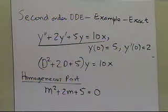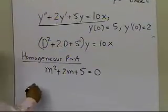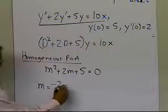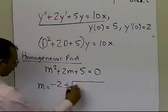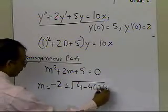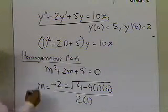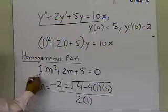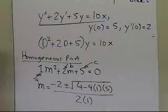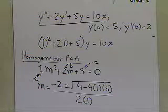Now I need to find out what the roots of this particular equation are. I'm going to use the quadratic formula, so it's minus b, which is minus 2, plus or minus the square root of b squared, which is 4, minus 4 times a, which is 1, and c, which is 5, divided by 2 times a, which is 1. Here a, b, and c refer to the typical ax² + bx + c formula.